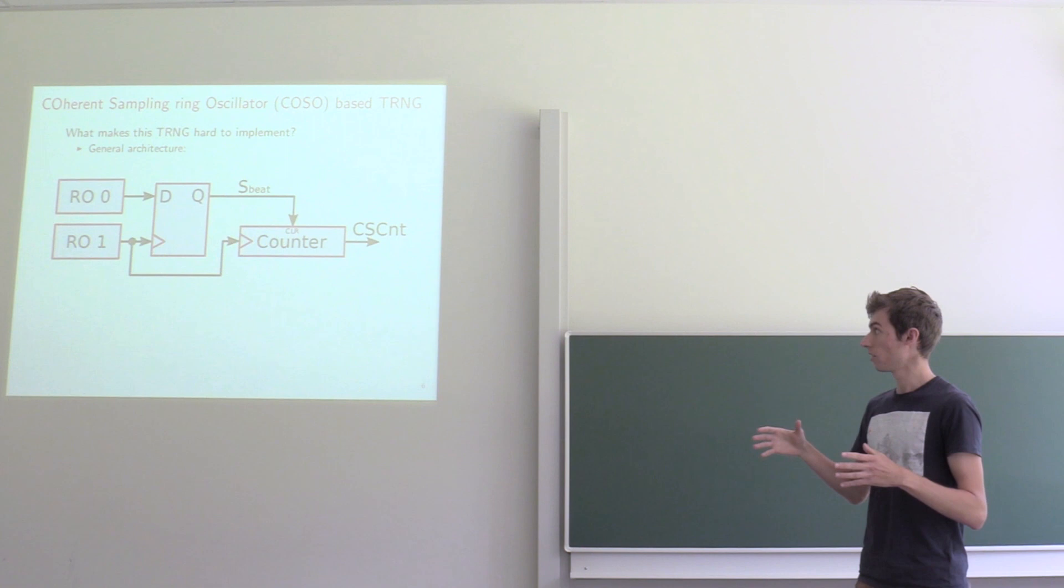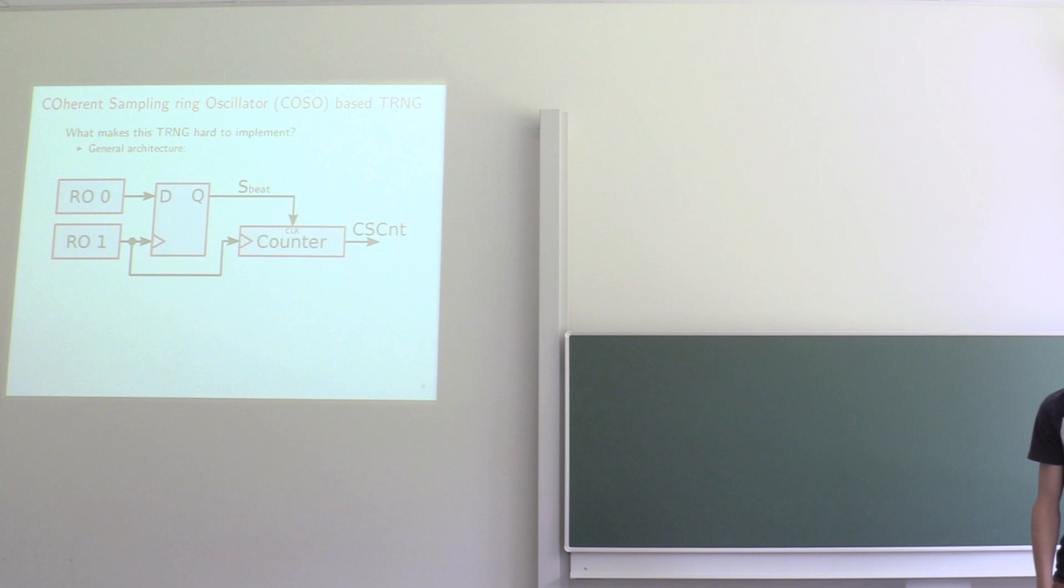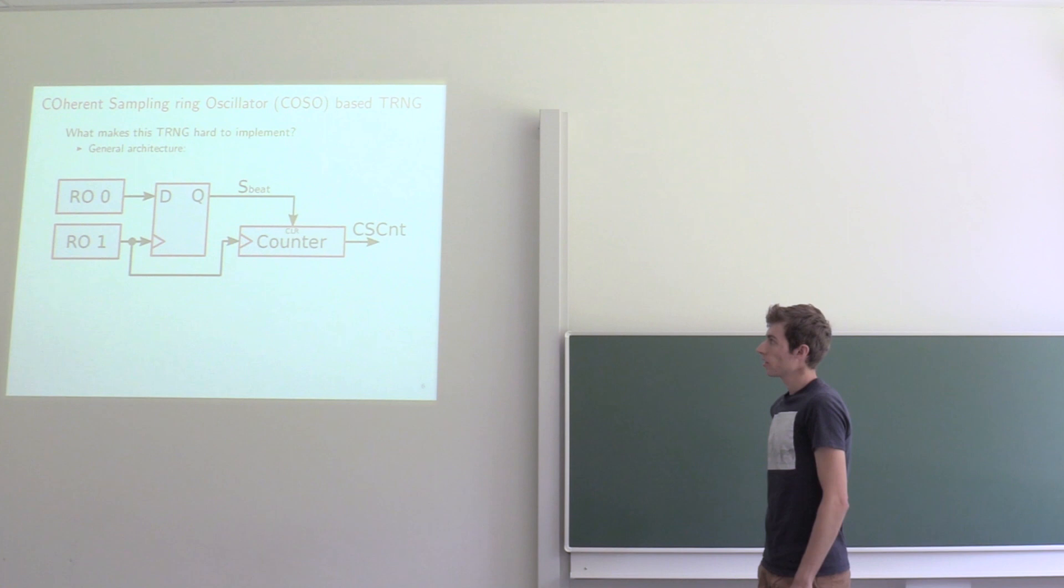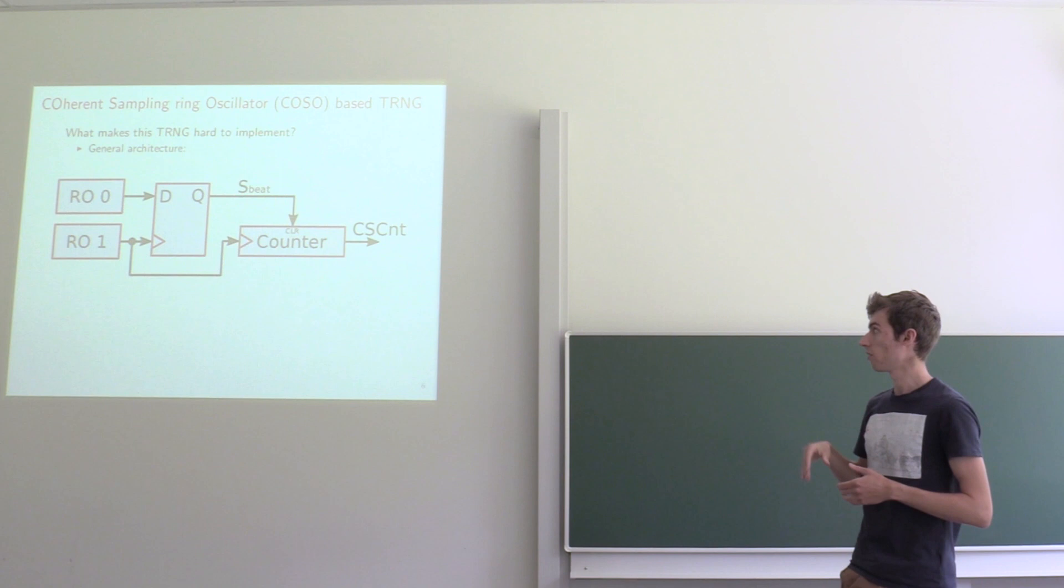Because the least significant bit of this counter can then be used to generate random data. To have a large variance at your counter output, you require these two ring oscillators to be matched. Because matching these two ring oscillators will increase the period length of your beat signal. And by increasing the period length you will increase the average value of the counter value and also its variance.